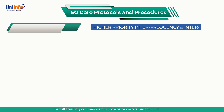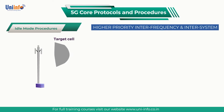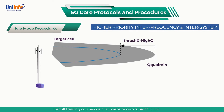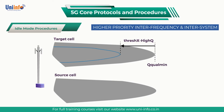Our next topic is High Priority Inter-Frequency and Inter-System Cell Reselection. Selection towards a higher priority layer can be based upon either RSRP measurements or RSRQ measurements. If the threshold serving low quality is broadcast by SIB2, then the procedure is based upon RSRQ measurements. In that case, the UE moves to the higher priority layer if the following condition is satisfied for the target cell.